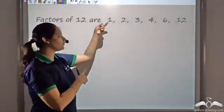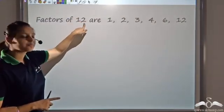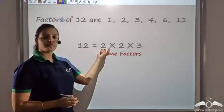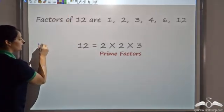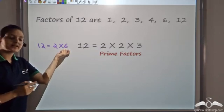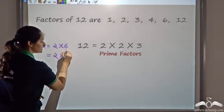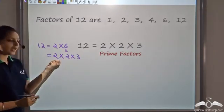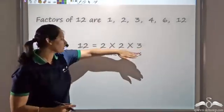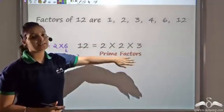That process was tedious — checking every number from one to twelve. Instead, since twelve is a composite number it can be broken down into primes. I write twelve as two into six. Six is composite, so I break it further: six equals two into three. Two is prime, two is prime, three is prime. So twelve equals two into two into three. This is how you completely break a composite number into all its prime factors.